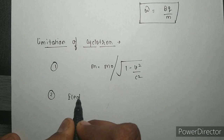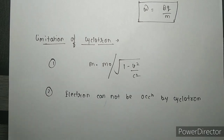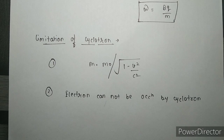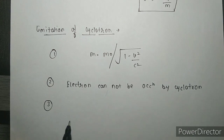The second limitation of the cyclotron is that electrons cannot be accelerated by a cyclotron. This is because the mass of the electron is very small, and even a small increase in energy makes the electron move at a very high speed. As a result, the electron quickly goes out of step with the oscillating electric field.